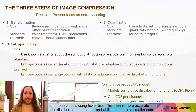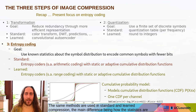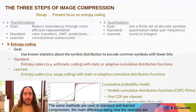This means more accurate prior distributions and higher probabilities result in a smaller code. The same methods are used in standard and learned compression, the main difference being how the statistics are acquired.